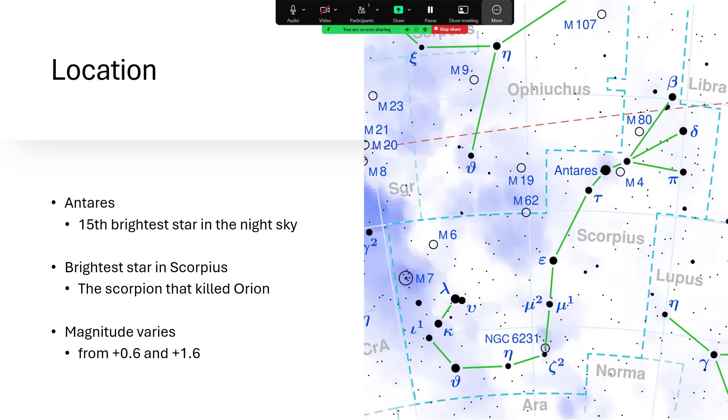And in fact, Scorpius in the summer just makes it above the hedge. It's quite low in the sky from my latitude. So best seen if you're a bit further south than where I am at 52 degrees north here in Cambridge.